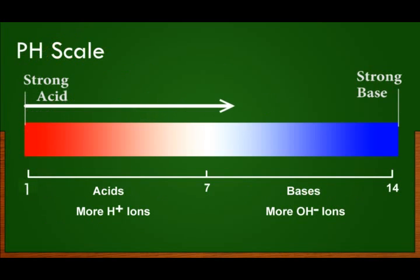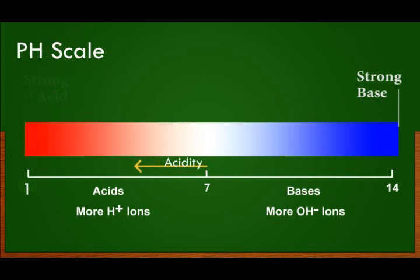pH value ranges from 1 to 14, where 7 is pH of the neutral solution. As pH decreases from 7 towards 1, the acidic strength of the solution increases. And as it increases from 7 to 14, alkalinity of the solution increases.